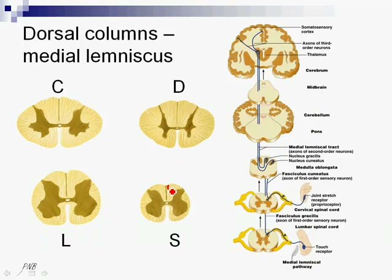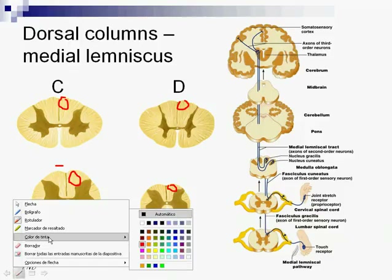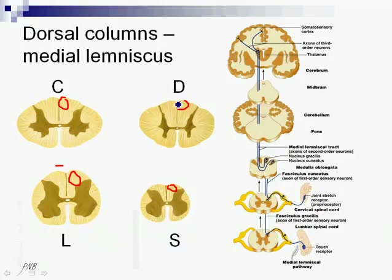Now, in these cuts we can see at a sacral and a lumbar level, on the dorsal side, we have only gracilis fasciculi. Whilst in the cervical and the dorsal or thoracic level, we have also cuneatus fasciculi. This is because the fibers that form the cuneatus fasciculus come from the upper part of the trunk and upper limbs, whilst the gracilis fasciculus is formed by fibers coming from the lower part of the trunk and lower limbs. So we can only see cuneatus fasciculus from a thoracic level upwards.